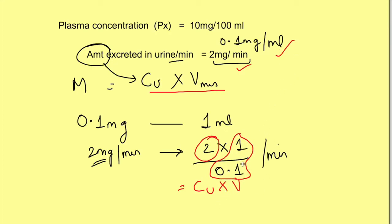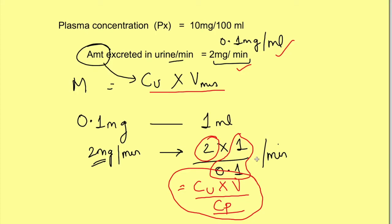The plasma concentration of the substance is the denominator. So the formula for clearance is: clearance = (U × V) / P. One thing to be very clear about: for using this formula, the substance must be freely filtered in the tubules.